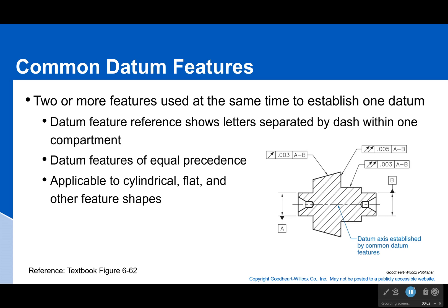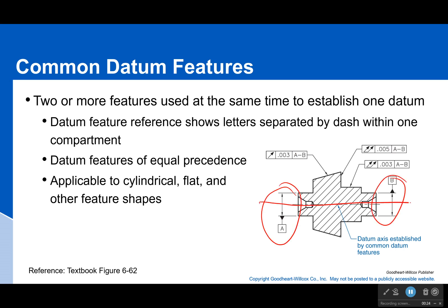Now let's talk about something called a common datum feature. This is why I kind of flubbed it earlier when I said we're only ever going to see three letters, because technically you could see more. You'll see something like this. You're like, well isn't that just two datums? It's not actually. This is called a common datum feature — we're using both A and B to make a single axis that it rotates around. We're not just using the axis of B, we're not using the axis of A; we're using some common average axis that takes into account both of them at the same time.